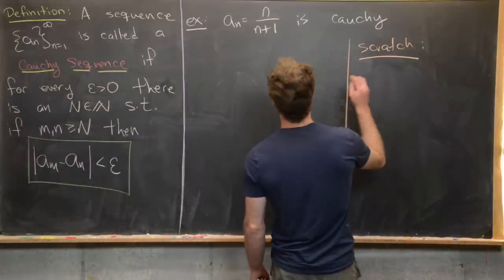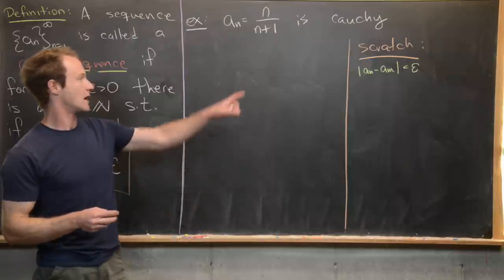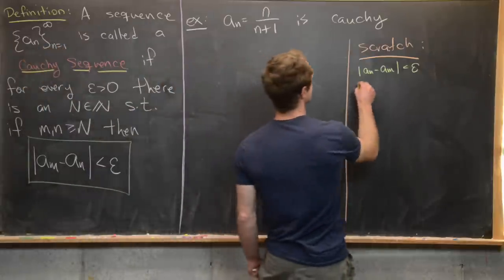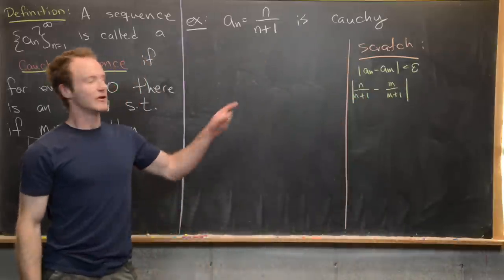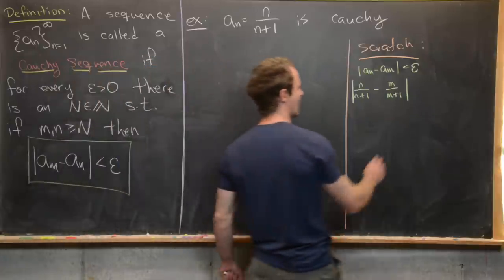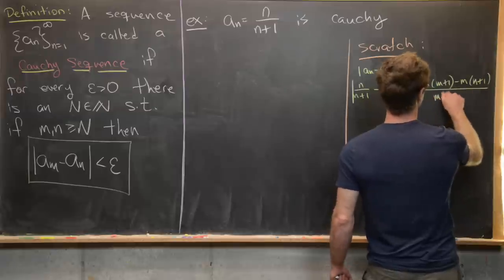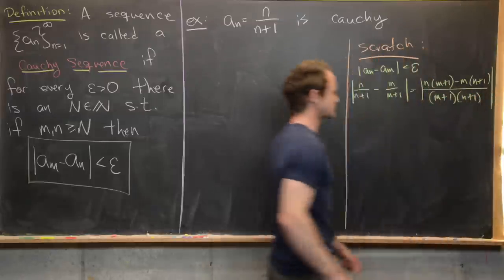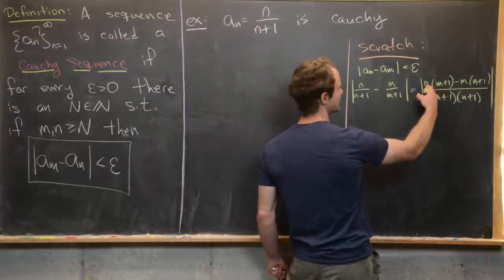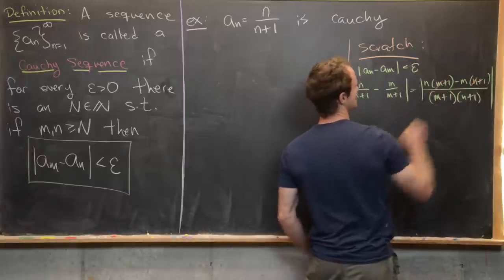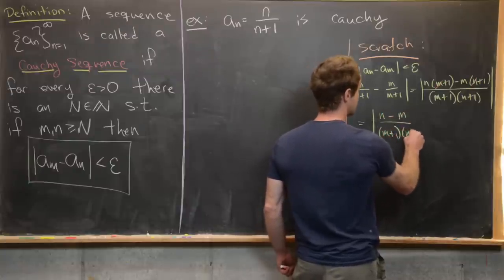What we want is |a_n - a_m| to be less than some epsilon which we're given. Plugging in the value of the sequence gives us |n/(n+1) - m/(m+1)|. Combining those fractions with a common denominator gives us |n(m+1) - m(n+1)| over (m+1)(n+1). Distributing in the numerator, the mn terms cancel, leaving |n - m| over (m+1)(n+1).